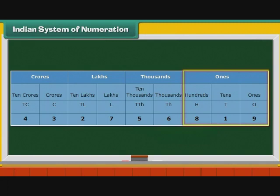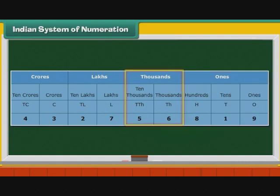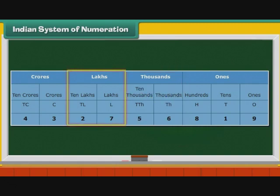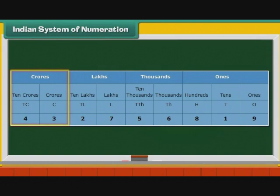The ones group has three digits: 9, 1, and 8. Each of these digits has a specific place — they are ones, tens, and hundreds. Similarly, the thousands group has two digits: six and five. Their places are thousands and ten thousands. The lakhs group has two digits: seven and two. Their places are lakhs and ten lakhs.